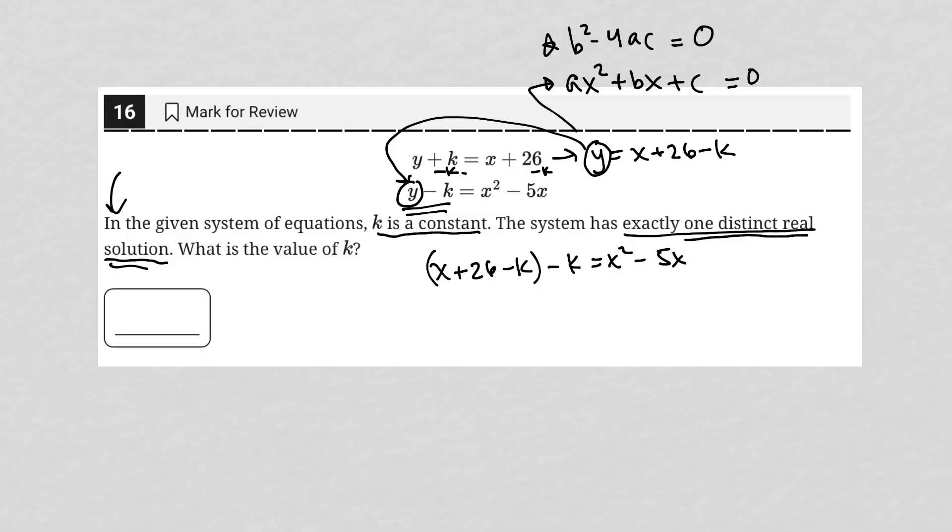Now for some simplification, x plus 26 minus k minus k equals x squared minus 5x. That becomes x plus 26 minus 2k equals x squared minus 5x. And I'm going to solve everything to the right-hand side to keep my x squared positive.